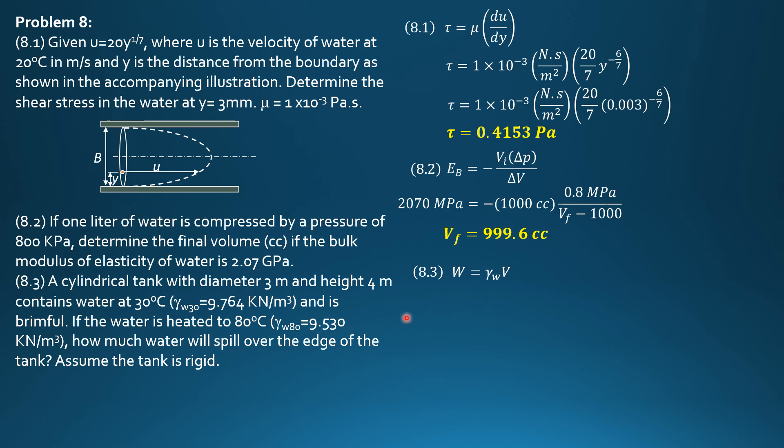At 30 degrees Celsius, the volume of the tank is pi radius 1.5 squared times height 4, which is equal to 9 pi cubic meter. Weight is 9.764 at 30 degrees Celsius times volume 9 pi, which equals 276.07 kilonewtons. This weight remains the same.